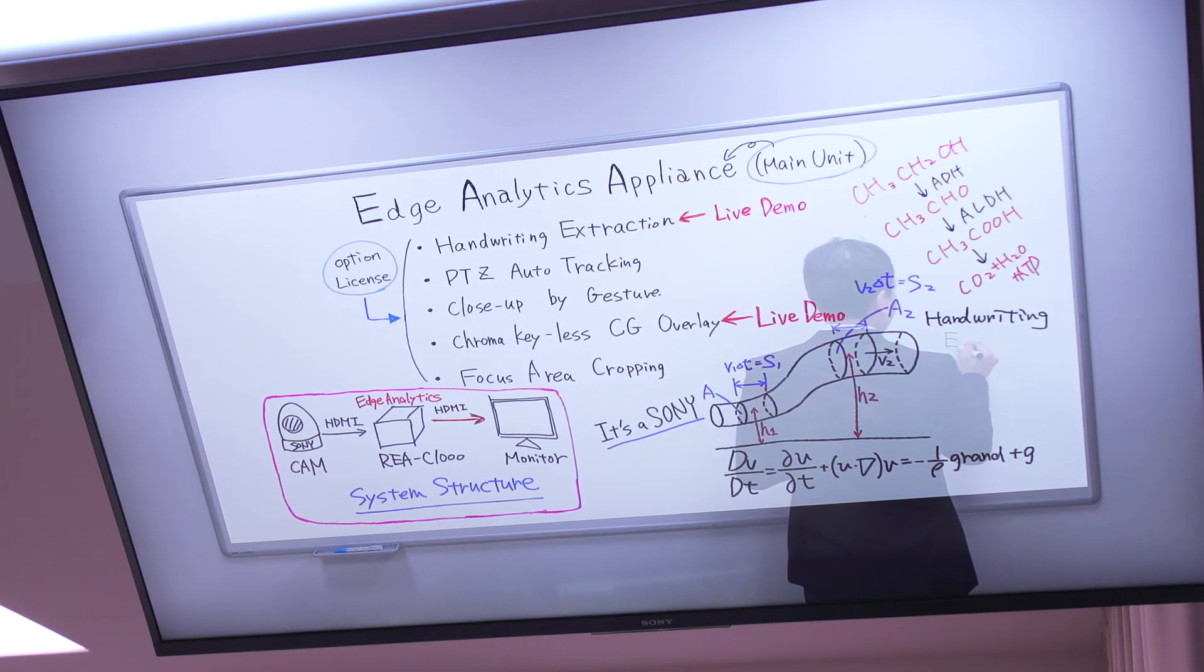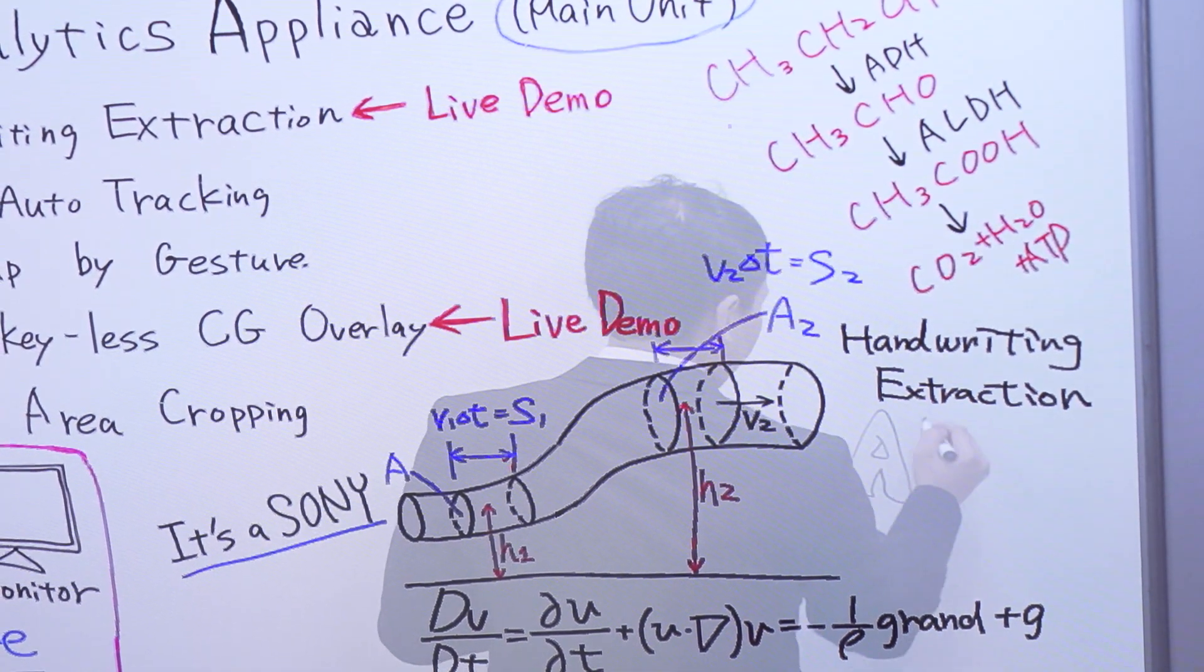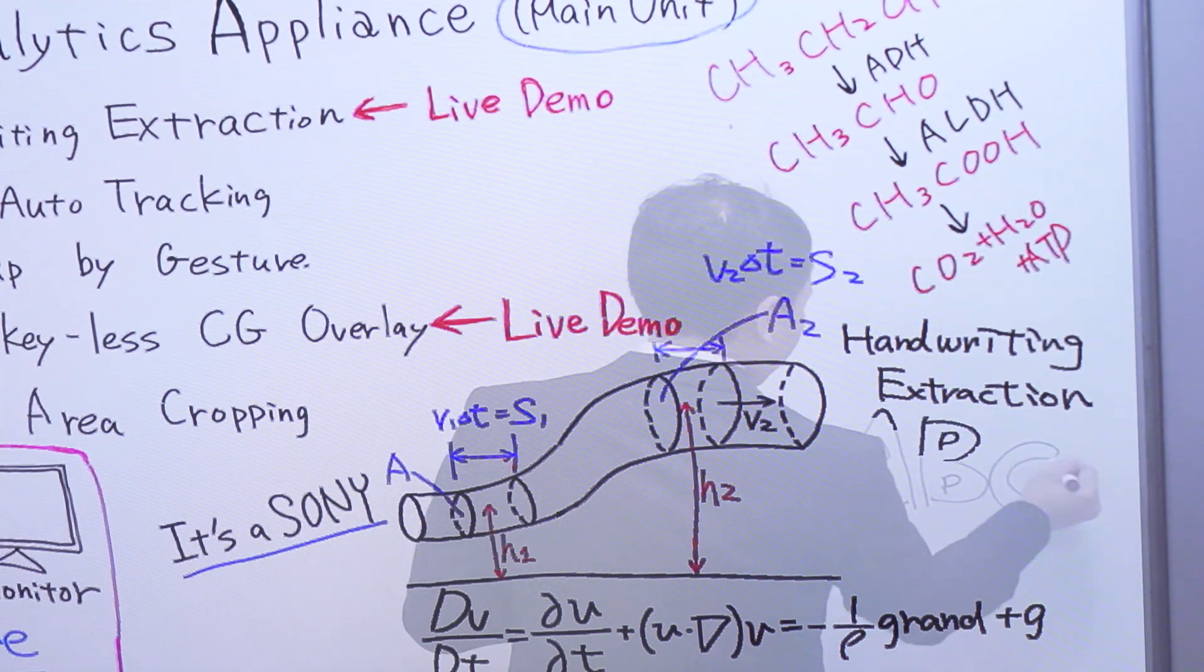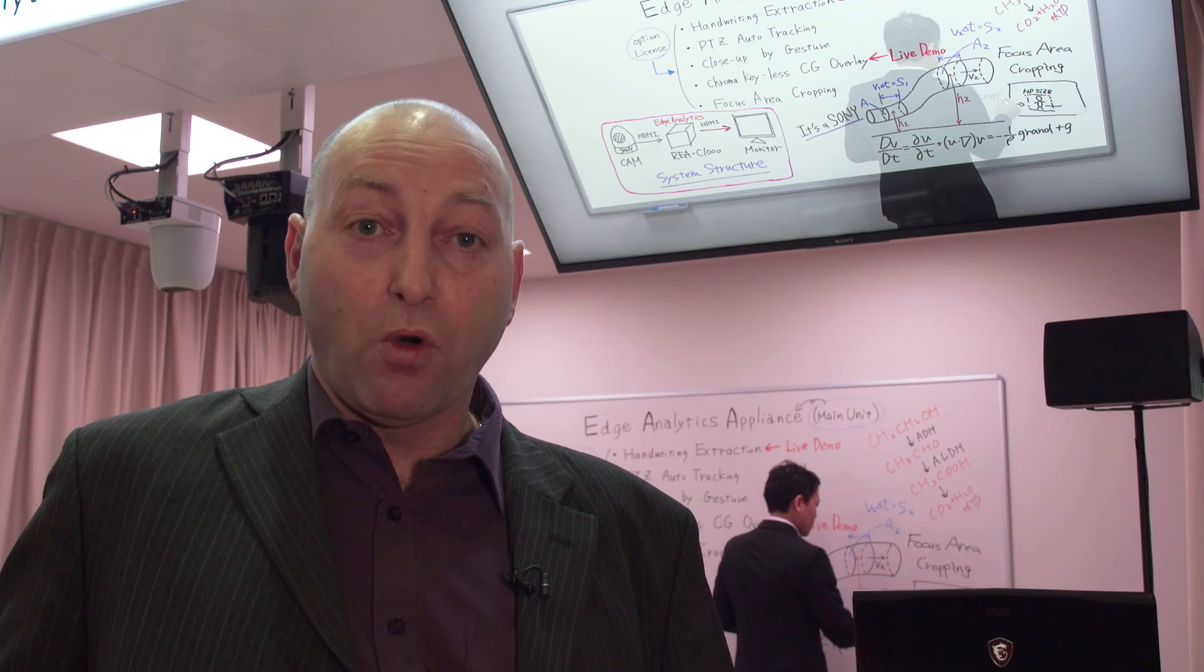Using handwriting extraction, we can mix the digitized content that the camera is seeing. This information is then transferred and mixed with the live video from the connected camera. This allows the tutor to gesture and highlight any key points that they have written on the white or blackboard.